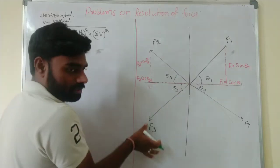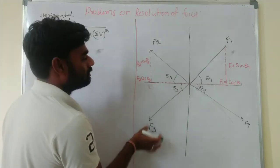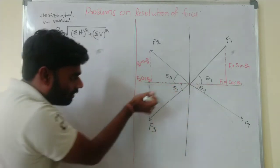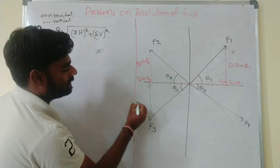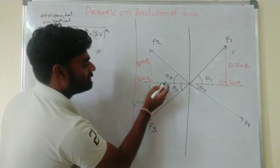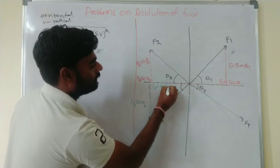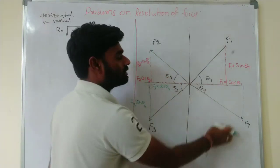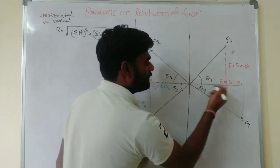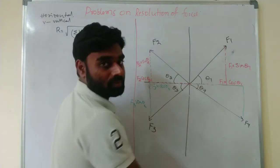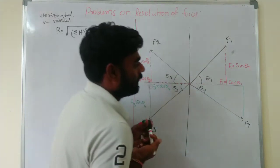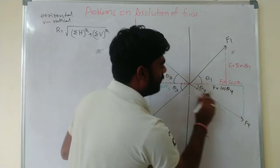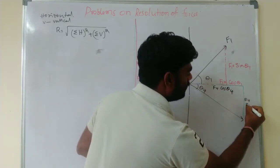The third force F3 is also resolved into two components — one vertical and one horizontal. Similarly, F4 is an inclined force and is also resolved into two components: in the x direction and in the y direction. For F4, the adjacent component is F4·cos(theta4) and the opposite component is F4·sin(theta4).